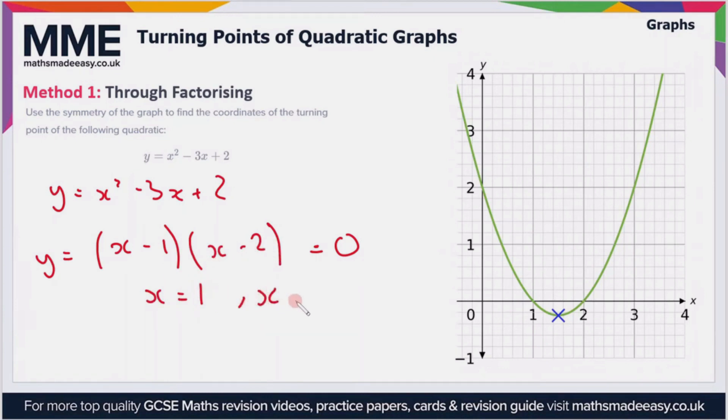So therefore our values of x are either 1 or x equals 2. So these are our two possible solutions to this equation, and therefore this is where the graph crosses the axes here at 1 and 2. Now finally then to locate the turning point, it says use the symmetry of the graph.